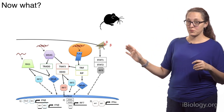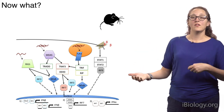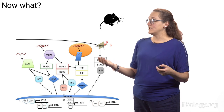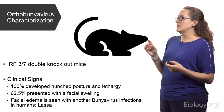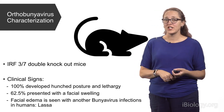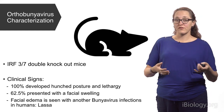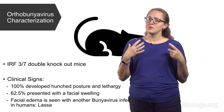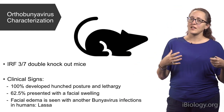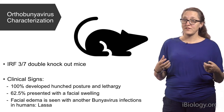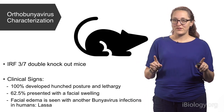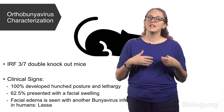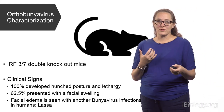The mouse has a deficient antiviral response, and in dengue and Zika this means they're more susceptible than immunocompetent mice. When we put bunyamwera into this knockout mouse model, we saw that 100% of the mice developed hunched posture and lethargy, which is a common clinical sign for mice not feeling well. We also noticed that 62.5% presented with facial swelling. Facial edema is seen often with another bunyavirus infection in humans — La Crosse fever. Not saying bunyamwera is La Crosse fever, because this is in a compromised mouse and not directly comparable to what we see in the real world.